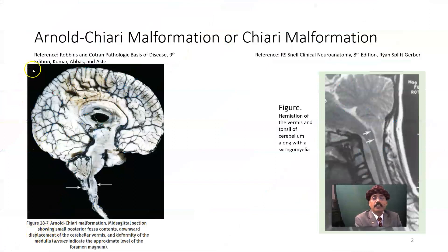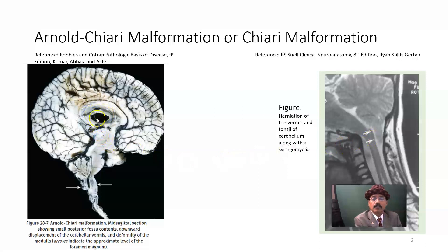These are the images of Arnold-Chiari malformation. Look at that herniation of the vermis and the tonsil here. The ventricular system is very large because of obstruction. That is why the ventricular system — not only the lateral ventricles —